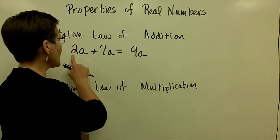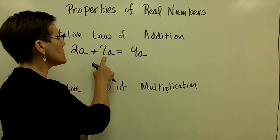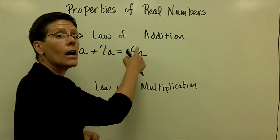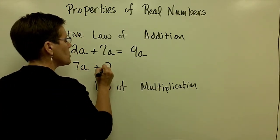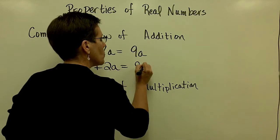The variable portion has to be the same in order for me to add them. Since these are both A's, I can add their coefficients, the 2 and the 7, to say that I have 9 of those A's. I can also do it in the other order. 7A plus 2A also will give me 9A.